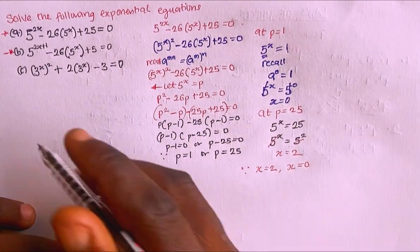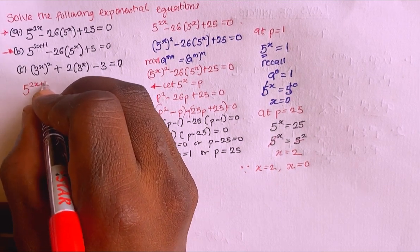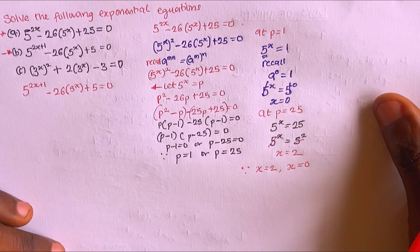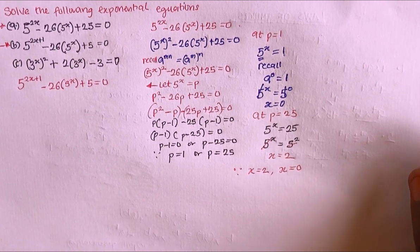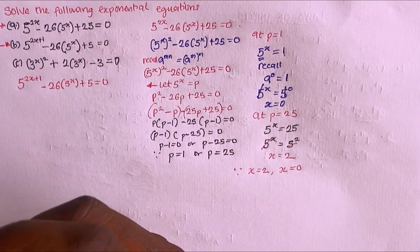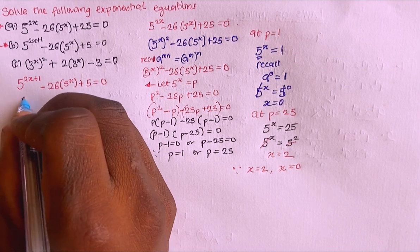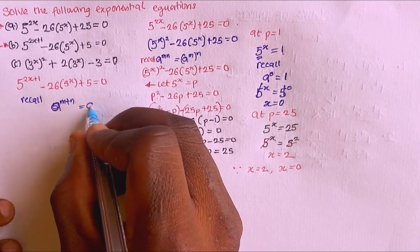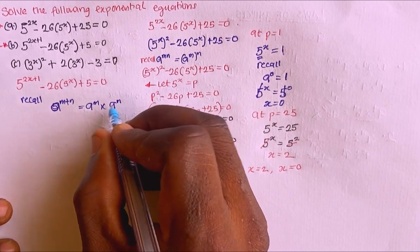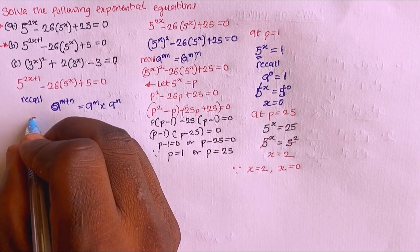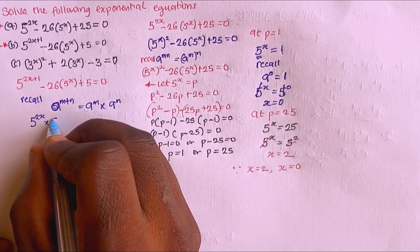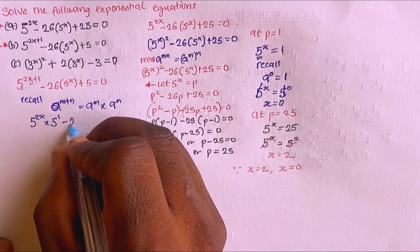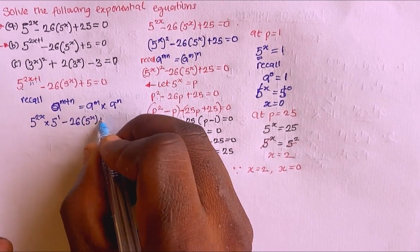Now let's move to the second equation: 5^(2x+1) minus 26·(5^x) plus 5 equals 0. Recalling the law a^(m+n) = a^m · a^n, I can write 5^(2x+1) as 5^(2x) times 5^1. So the equation becomes 5^(2x) · 5 minus 26·(5^x) plus 5 equals 0.